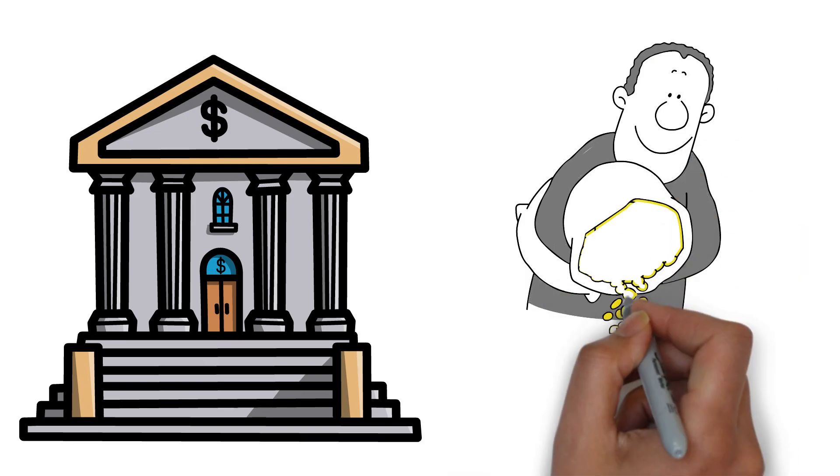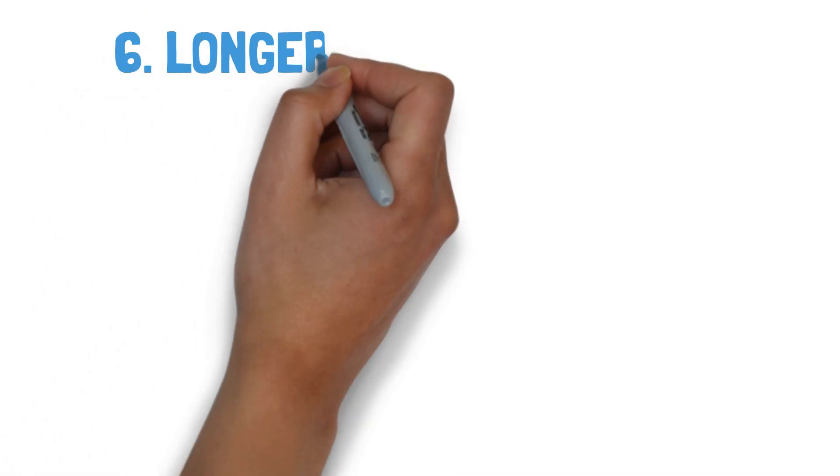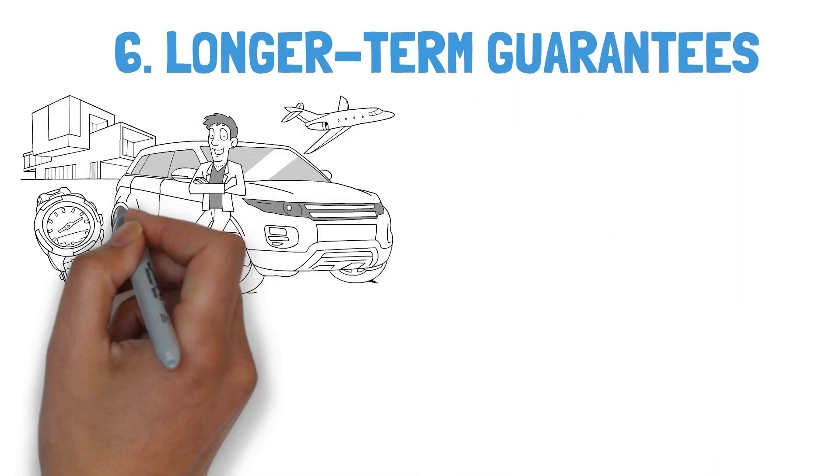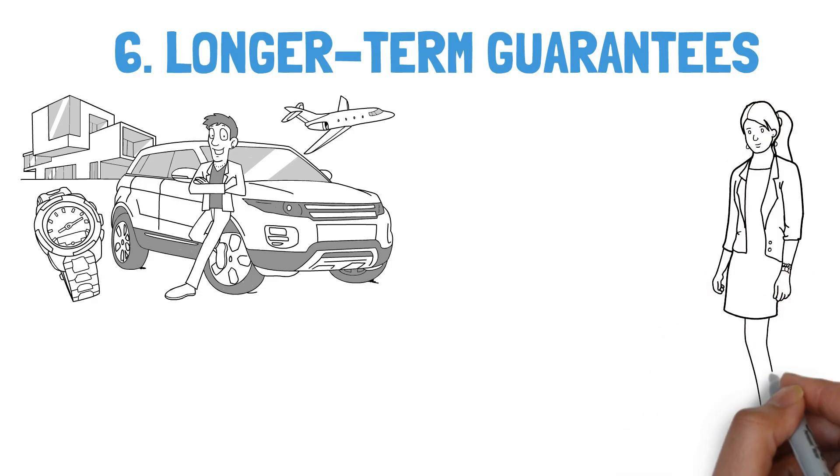Six: Longer-term guarantees. Richer individuals may either be able to afford more expensive things with longer expected lifespans or be less inconvenienced by unexpected breakdowns.